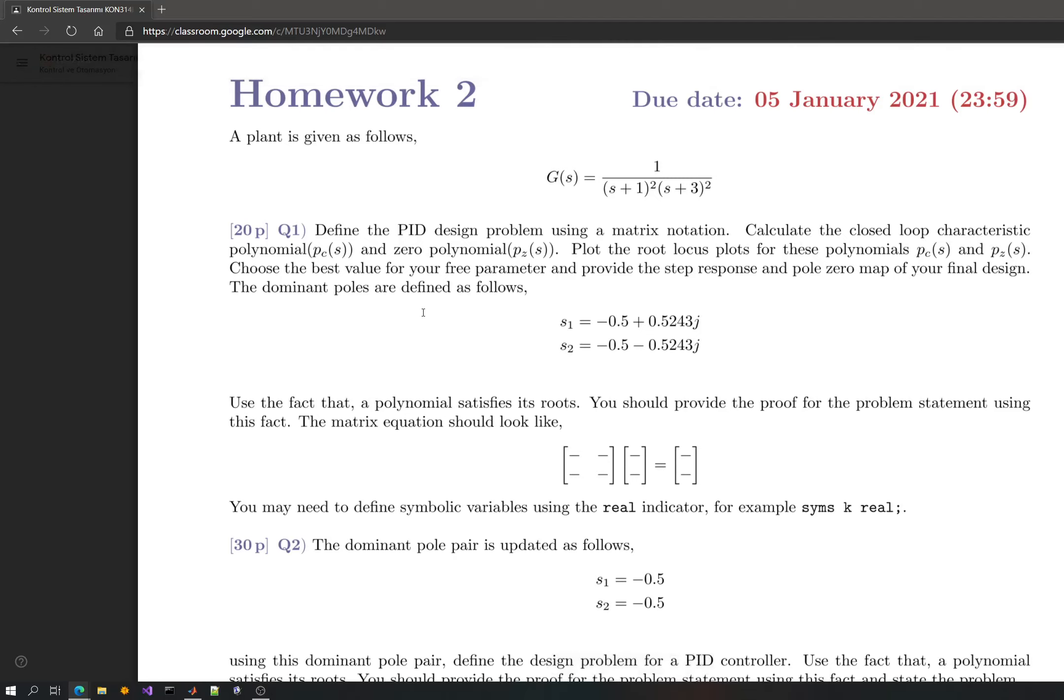Then you will convert these polynomial equations into a root locus equation and extract the transfer function needed for that root locus for each polynomial. Plot them, and then use both plots simultaneously to design or choose the last remaining free parameter. Once you've done that, you will end up with a solution and you will plot the step response and the pole zero map for your final design.